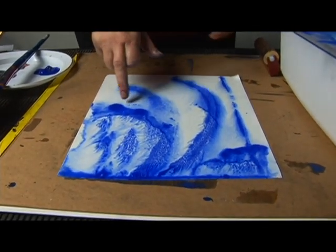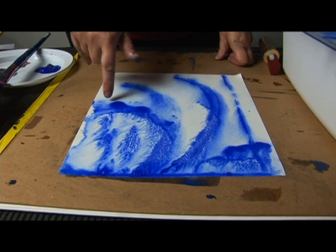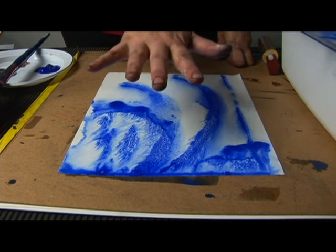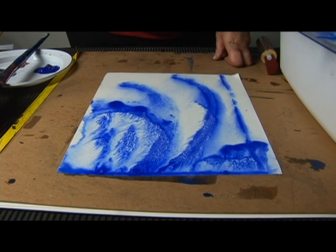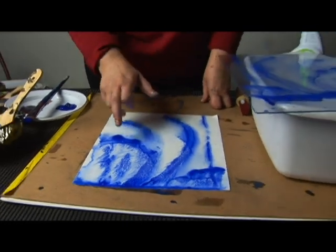Where I put it on real thick, you're going to end up with these sort of big circles. Because what you're doing by putting pressure on is you're smushing out the paint. So the thicker the paint is, the more it's going to smush.